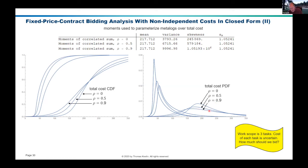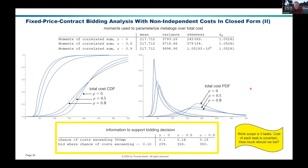This is what the shape of these distributions actually looks like. You can ask the questions you would ordinarily ask: what's the chance of costs exceeding 300 million? In the independent case, the chance was just 10%. If you have 50% correlation, the chance rises to about 14% of exceeding 300 million. And if you had 90% correlation, the probability is about 18% of exceeding 300 million.